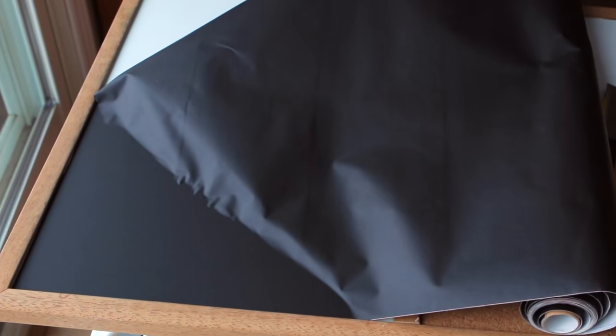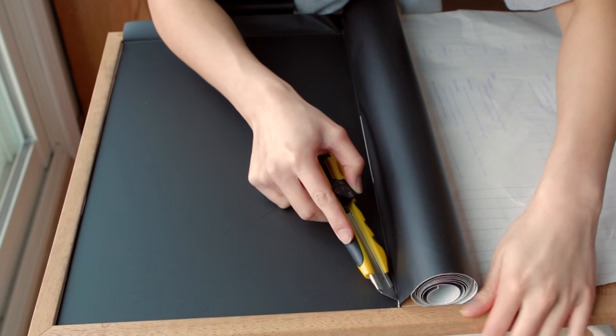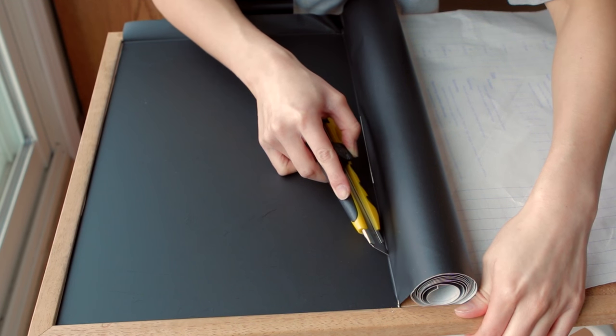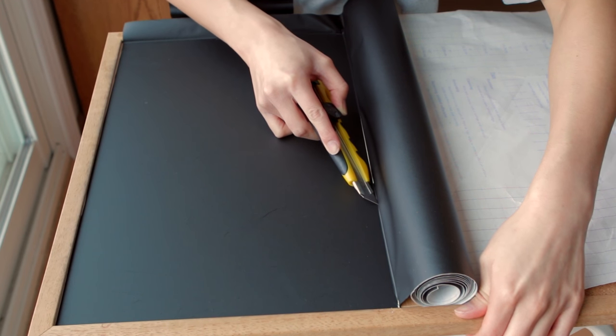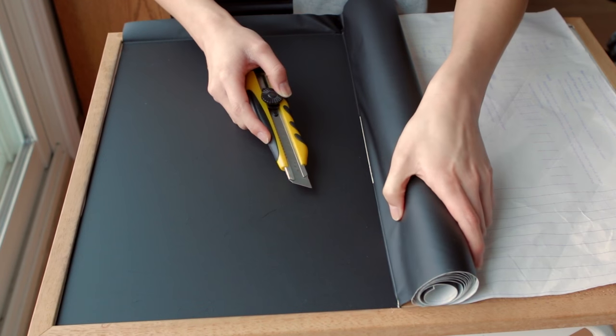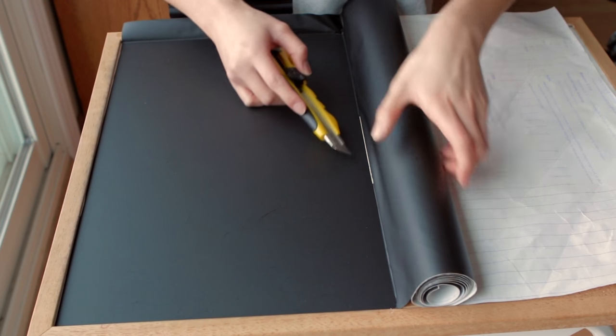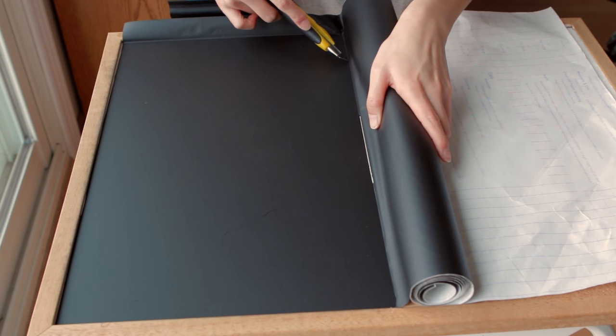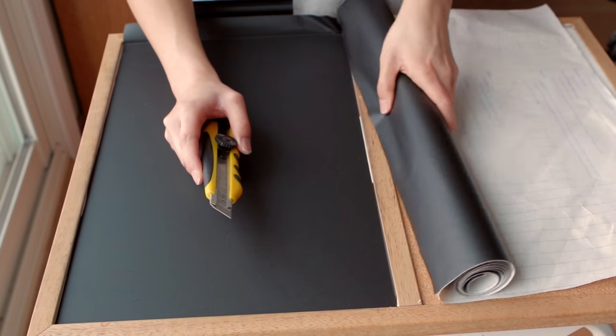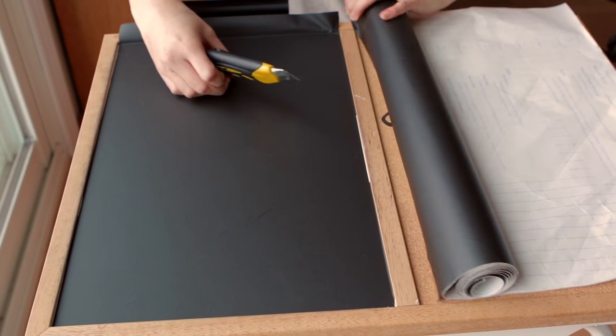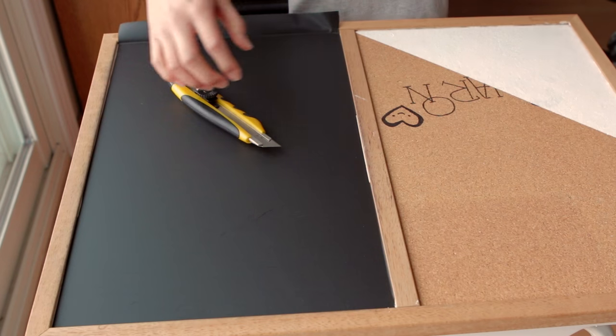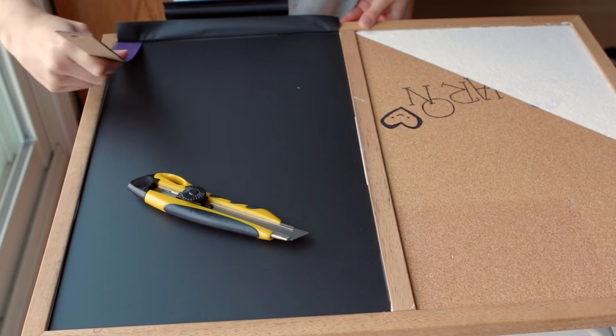And just another heads up, when you're applying contact paper, try not to stretch it out too much so you don't end up with weird creases or stretch marks. So once you are done applying your chalkboard contact paper to your whiteboard, go ahead and just run your finger or a ruler along the edges to make sure that it's really stuck on there. And then you can take your exacto knife and slice off any of the excess.